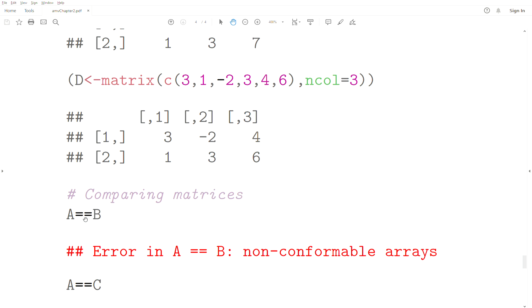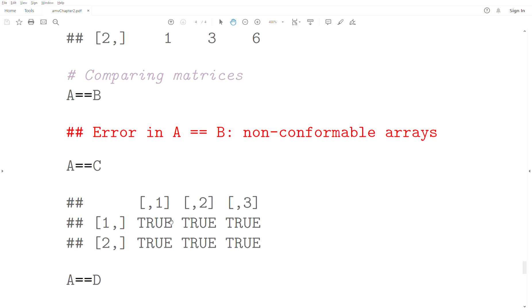Let's create a matrix C that's the same as A, and a matrix D that's almost the same as A, but the last element is different. When we compare A to B, the double equal sign in R asks: are these equal? We get an error because they're different dimensions—you can't compare them. We can compare A and C. It goes element by element comparing: true, true, true, true, true. These two matrices are the same.